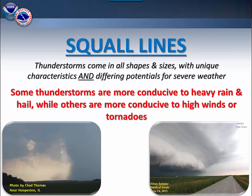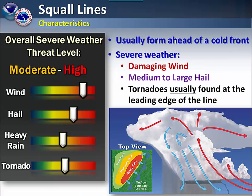In this part of our training, we will discuss squall lines. With squall lines, typically your severe weather threat will be on the moderate to high side. Squall lines usually will form ahead of a cold front. They can produce all sorts of severe weather — damaging winds, large hail, and tornadoes are all possible with squall lines.